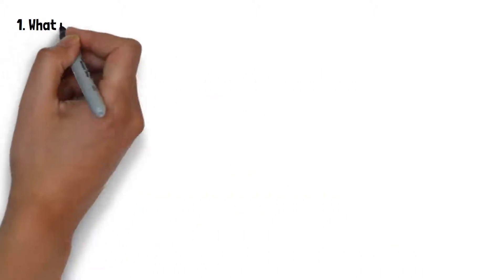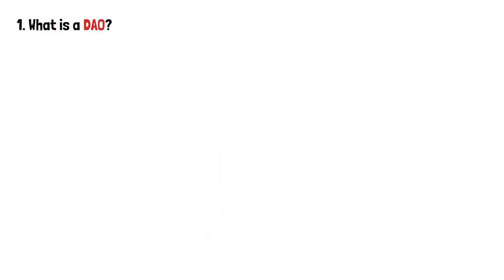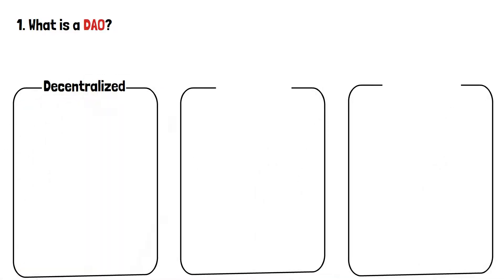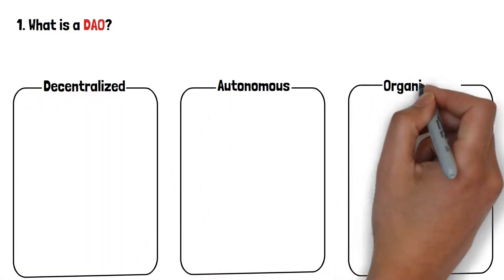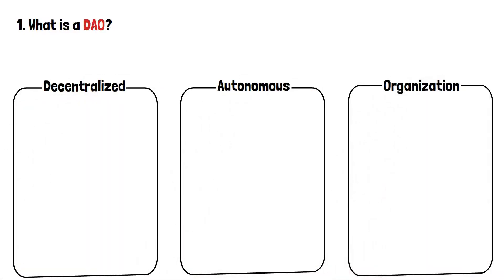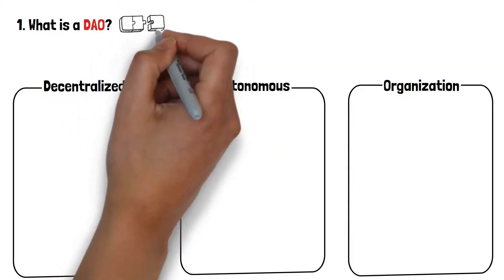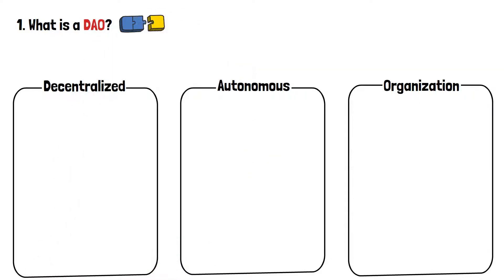First things first, what is a DAO? DAO abbreviates as a Decentralized Autonomous Organization. Three very big words, but when you break them down, the concept itself is rather simple.